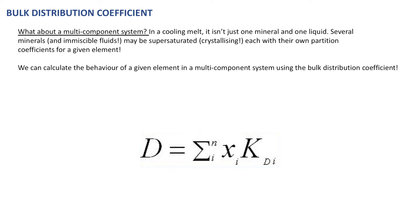What about a multi-component system? Previously we looked at the behaviour of an element between one solid phase and one liquid phase. But in a cooling magma we may have many different minerals being supersaturated — so many different minerals crystallising. In addition, we may have immiscible fluids or immiscible sulphide which may also affect the distribution of elements. We can calculate the behaviour of a given element in a multi-component system using the bulk distribution coefficient, which is the sum of the partition coefficients in the system to quantify the overall behaviour of a given element.